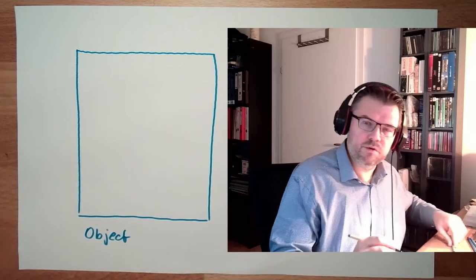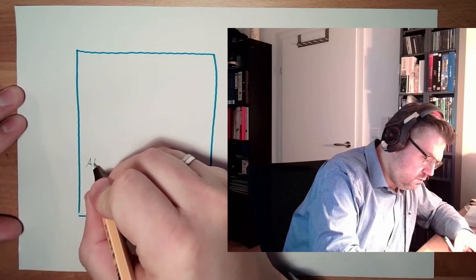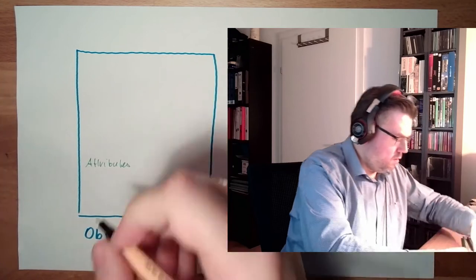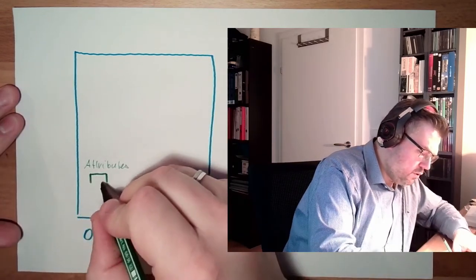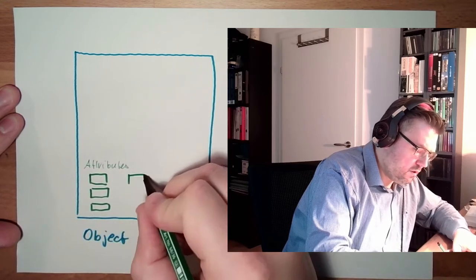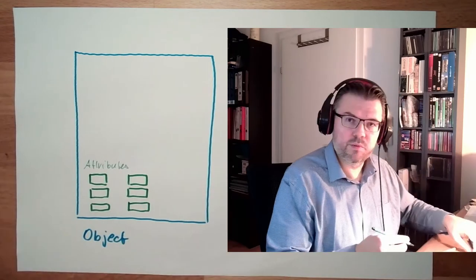Or what can an object contain? An object usually contains some things which are called attributes. Object has some attributes. The number is not limited. There are some attributes in the object which describe the object somehow. Attributes.